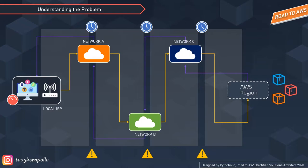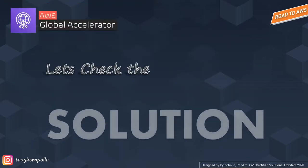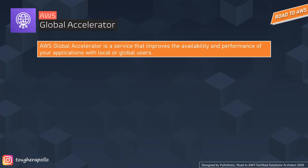If you or your users are far from the region currently serving the content, performance will be affected. The solution here is AWS Global Accelerators. Before diving in, I'd humbly request you to watch the CloudFront sessions we had so you can understand the terms I'll be using here. AWS Global Accelerator is a service that improves the availability and performance of your applications with local or global users.